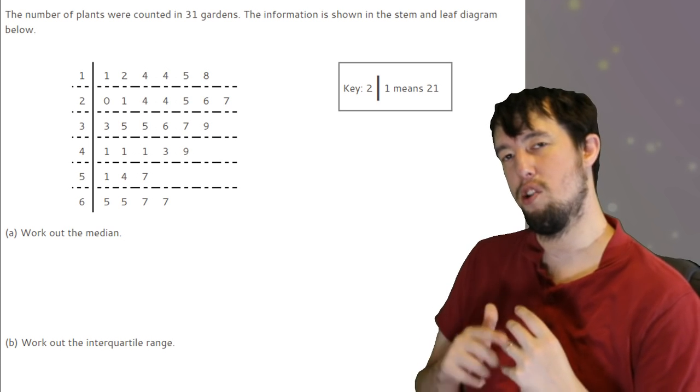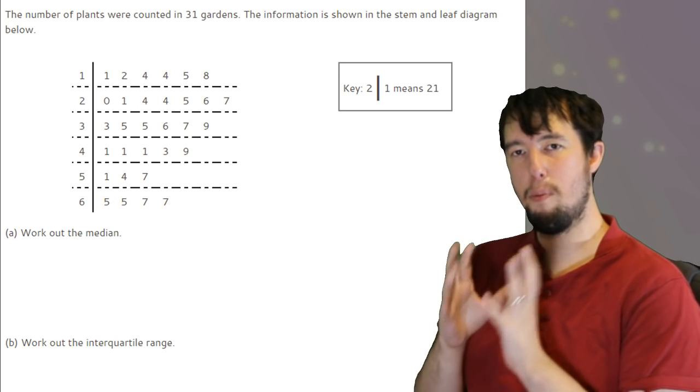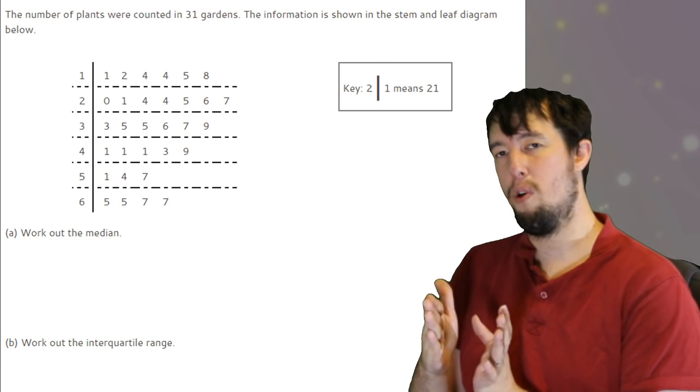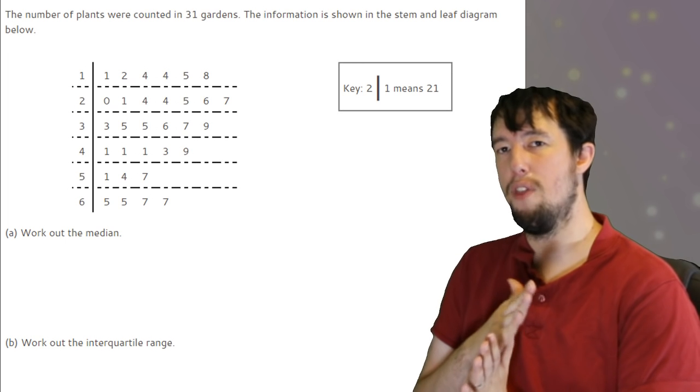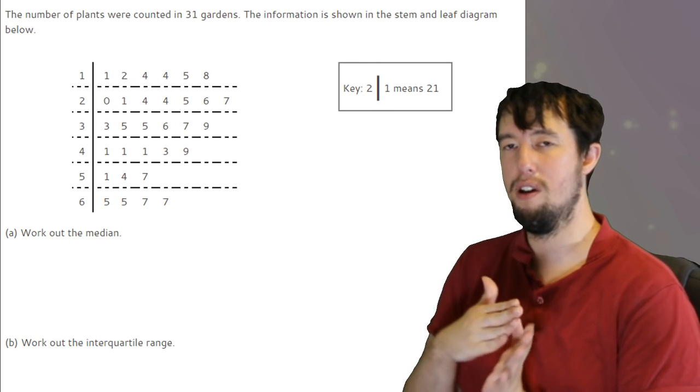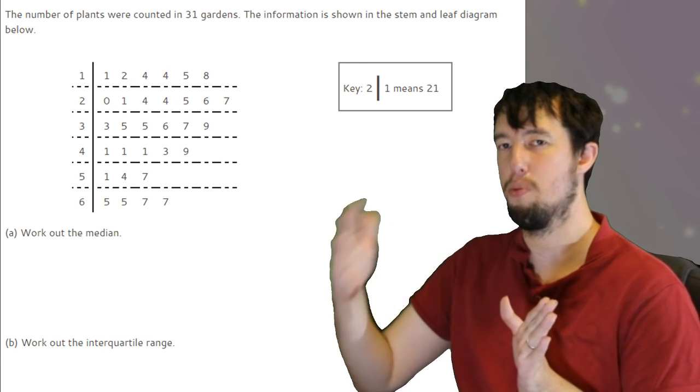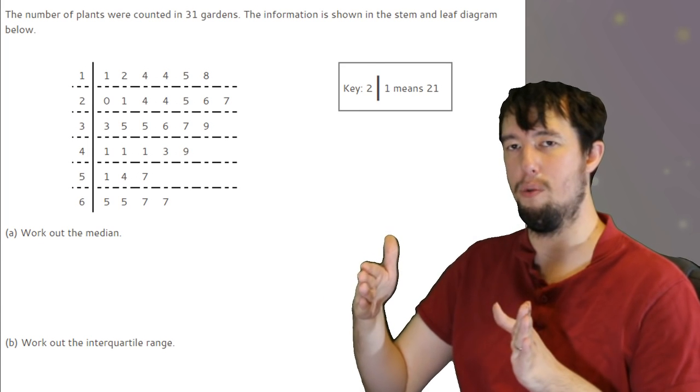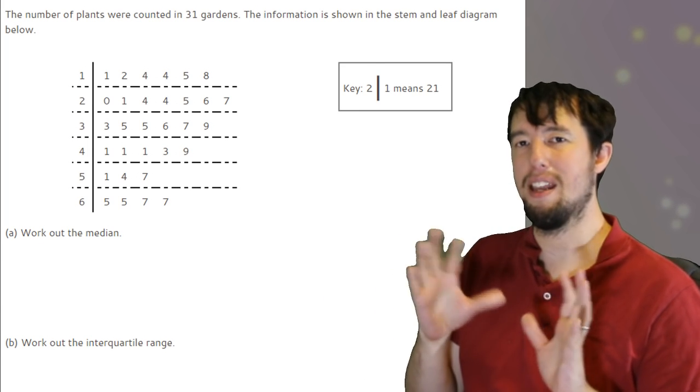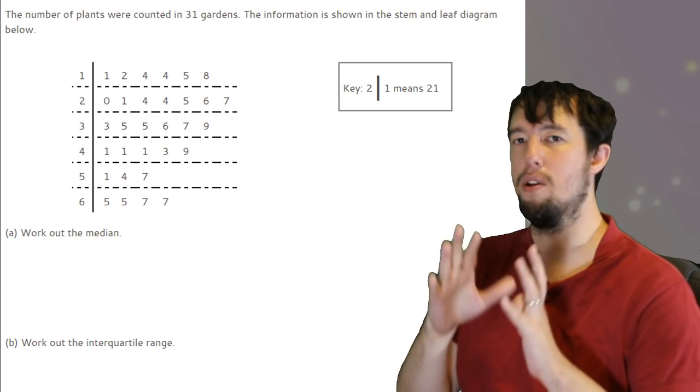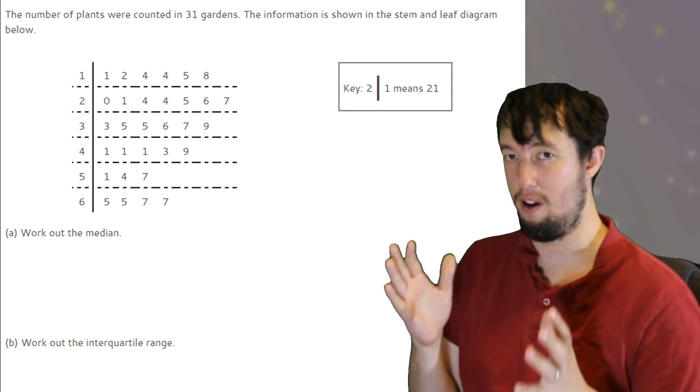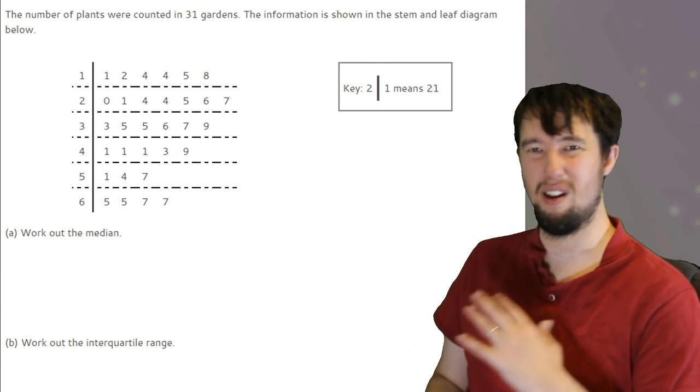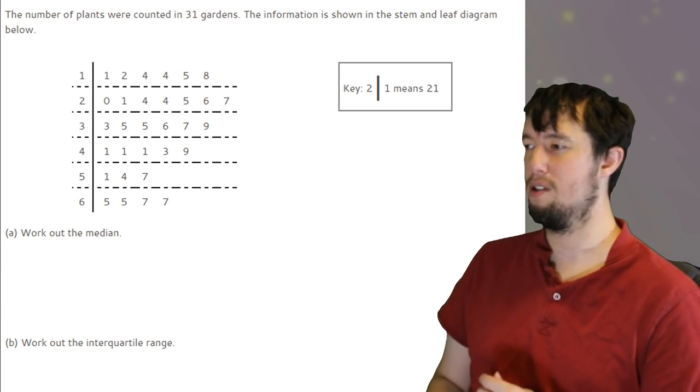To find the interquartile range, there's a proper way of doing this. Because it's the 16th one is the median, you can just go for the 8th one for the lower quartile, and then 8 plus 16, the 24th one for the upper quartile, and then upper quartile take away the lower quartile. Technically speaking, that's not correct, but it will get you the mark on all the previous exam questions I've seen. There's a long way of doing it, but that will work.